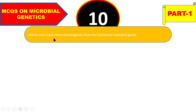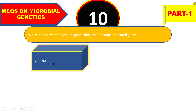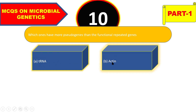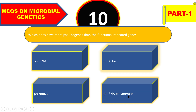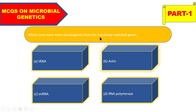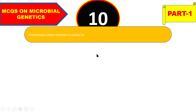Next question: which one has more pseudogenes than the functional repeated genes — tRNA, actin, snRNA, or RNA polymerase? The right answer is snRNA (small nuclear RNA).